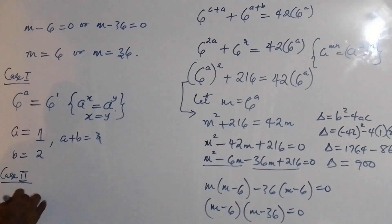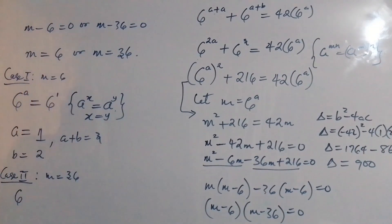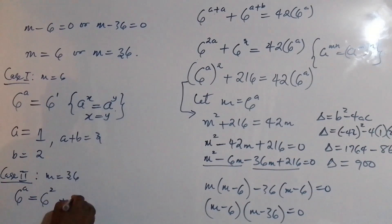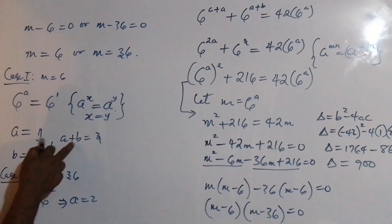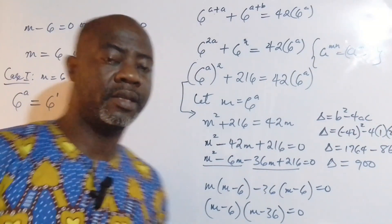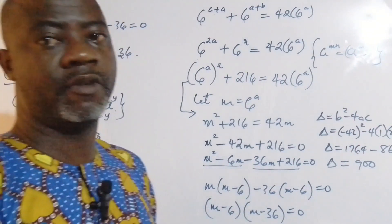For case two: m = 36, so 6^a = 36 = 6², therefore a = 2. Using a + b = 3, we get b = 1. So for case one: a = 1, b = 2; and for case two: a = 2, b = 1. Now let's quickly look at the second method of solving this.